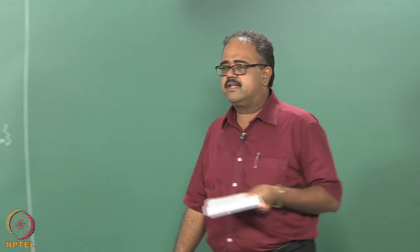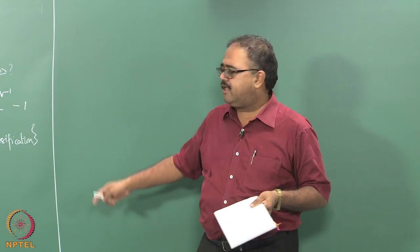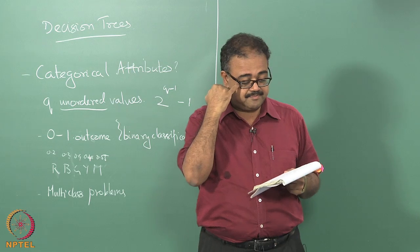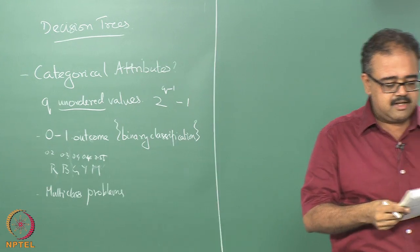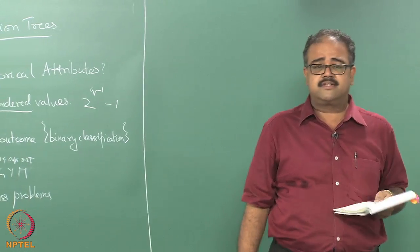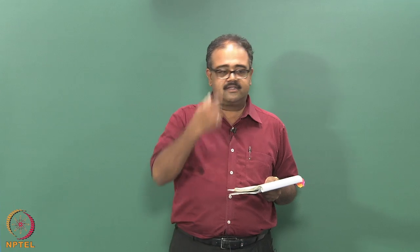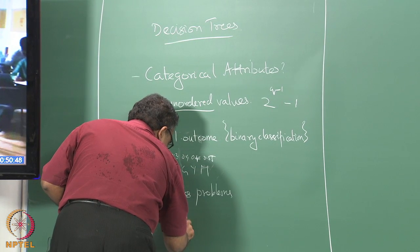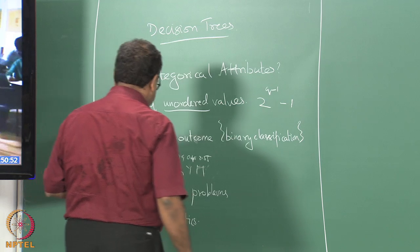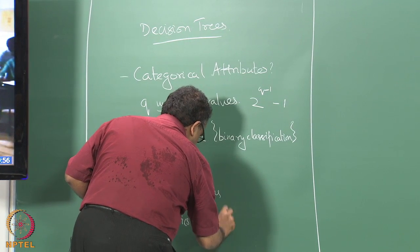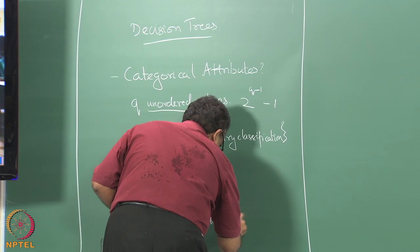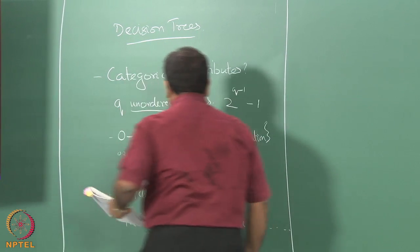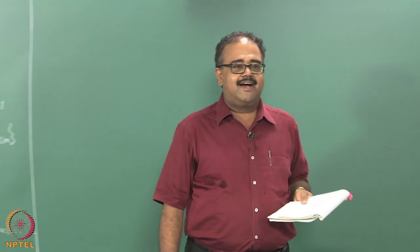Typically what people do is they end up doing some kind of very rough clustering on the values that attribute can take, and then try to define split points based on that. I'm not going to go into the details of the heuristics. If you're going to use this, you'll probably be using a package, but it will be good to read up some of these if you're interested. As soon as you enter heuristic territory, everyone can have their own favorite heuristic.